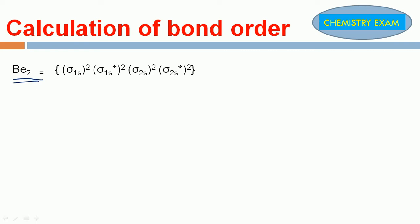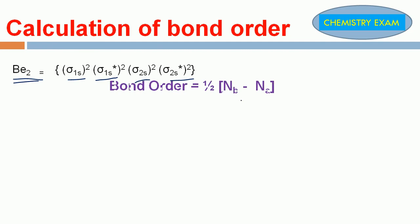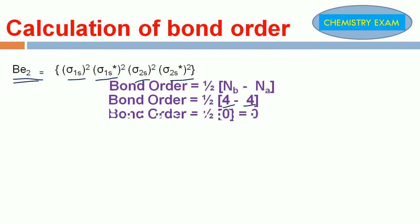Next, Be₂ molecule. What is the electronic configuration for this molecule? Sigma 1s², sigma star 1s², sigma 2s², sigma star 2s². Bonding electrons: 4, anti-bonding electrons: 4. So 4 minus 4 equals 0, and 1/2 into 0 equals 0. The bond order for Be₂ molecule is 0.